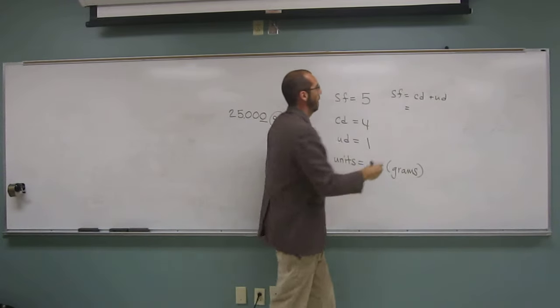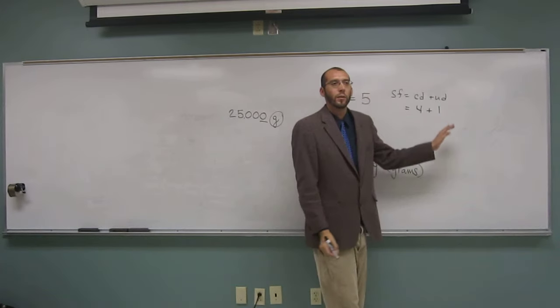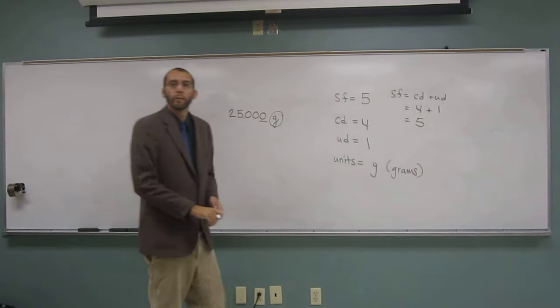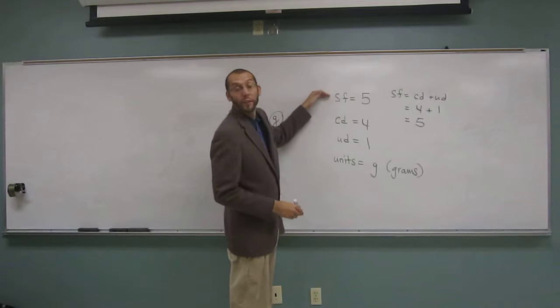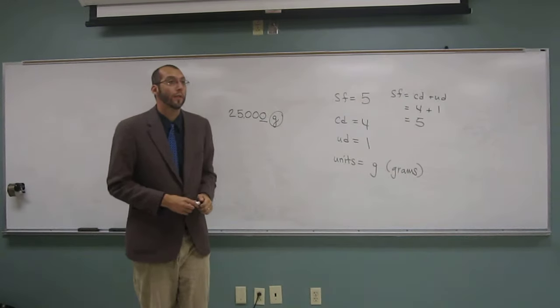Certain digits? Four. Right? And we know that the uncertain digits is always one, so even though we solved it with the uncertain, then significant, and then went back and calculated certain digits.